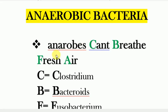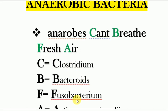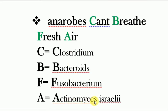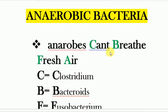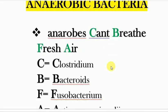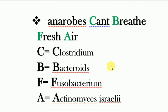The mnemonic is: 'Anaerobes Hunt Red Fresh Ear' — C for Clostridium, B for Bacteroides, F for Fusobacterium, and A for Actinomyces. In any case, the mnemonic is 'Anaerobes Hunt Red Fresh Ear.' Thanks for watching.